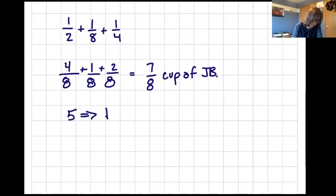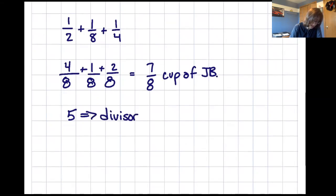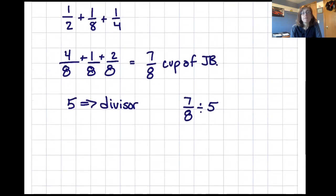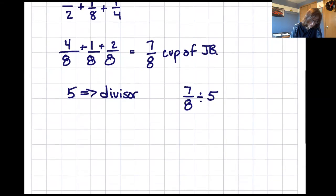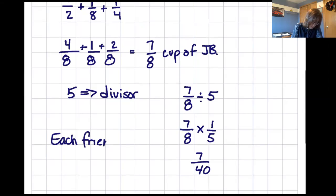And then I need to give that out, pass that out to five friends. That means I'm splitting it up into five pieces, which means guess what? Five is the divisor. So I need seven eighths divided by five. And here comes our special fraction division, which means I keep the dividend the same, switch division to multiplication, and take the reciprocal of the divisor, one fifth. And seven eighths times one fifth is seven fortieths. So each friend gets seven fortieths cup of jelly beans.